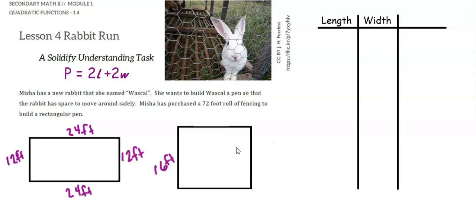If I were to make one of the dimensions 16, then the other dimension would need to be 20. So for each of these rectangles, the perimeter is 72, and I know that because you can multiply 2 times the length plus 2 times the width, and you will get 72.